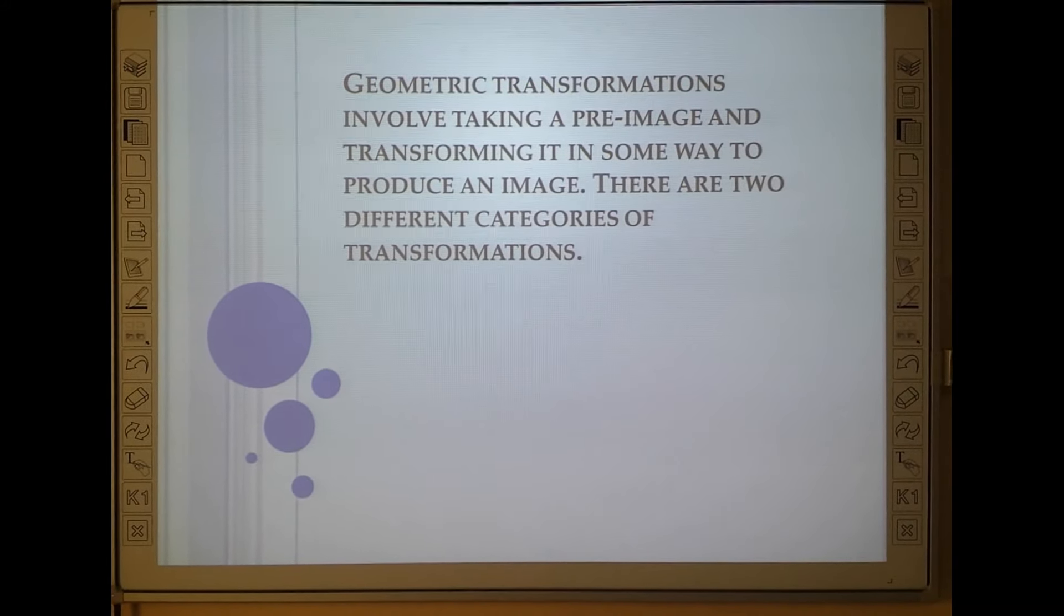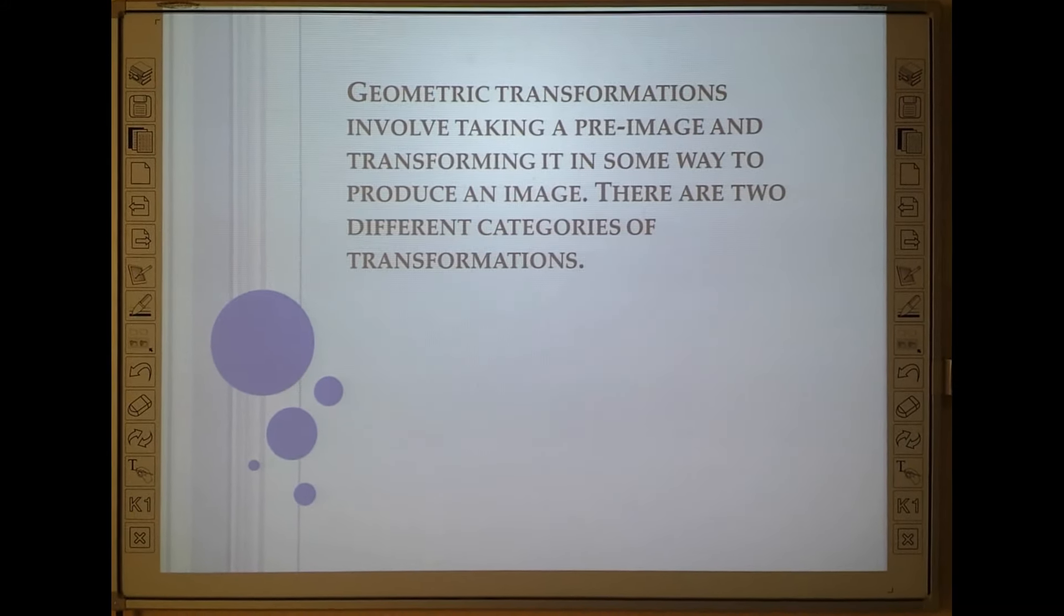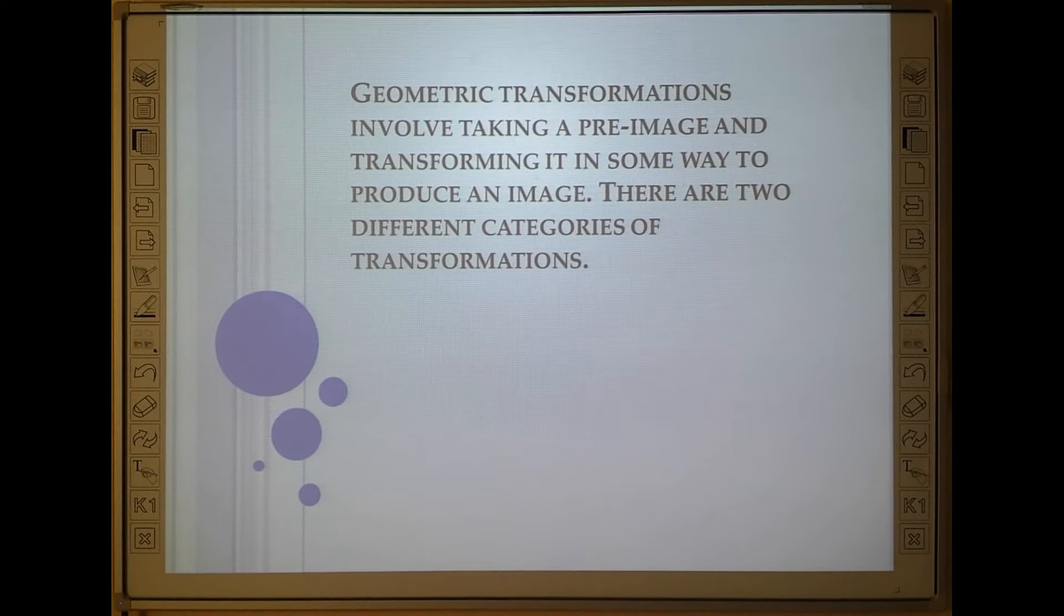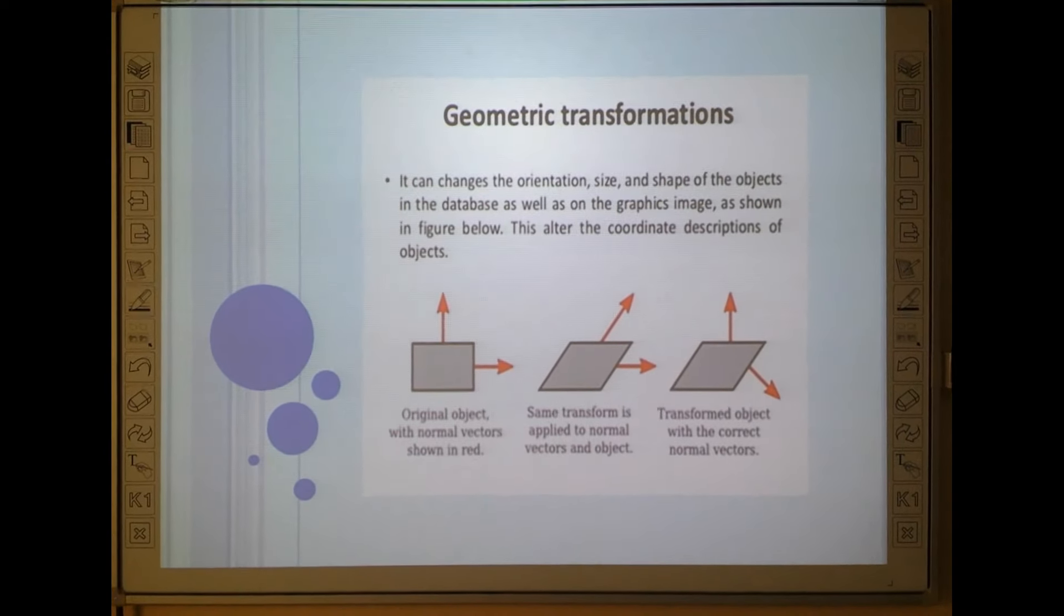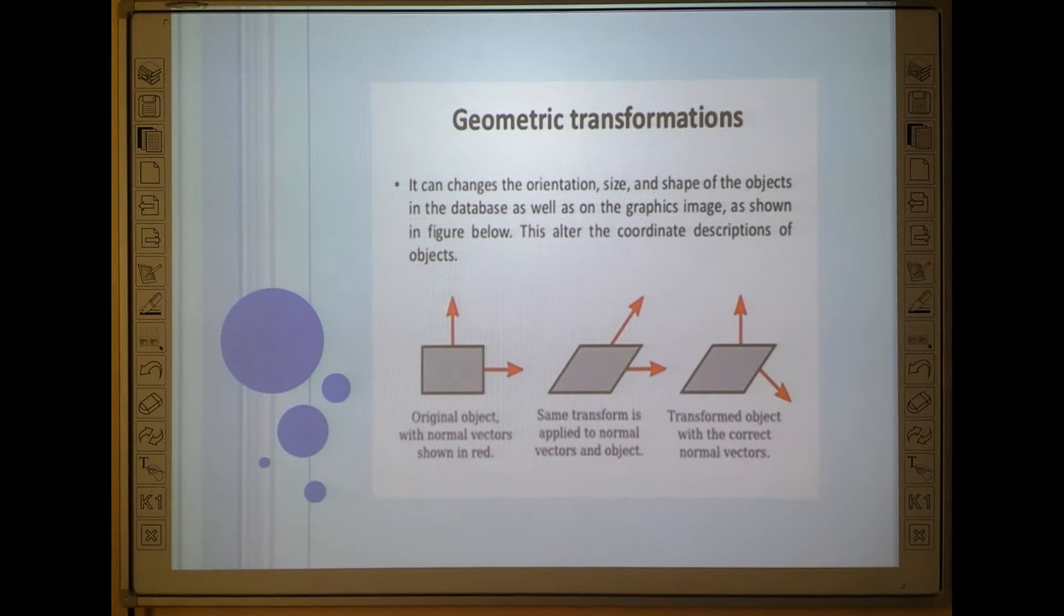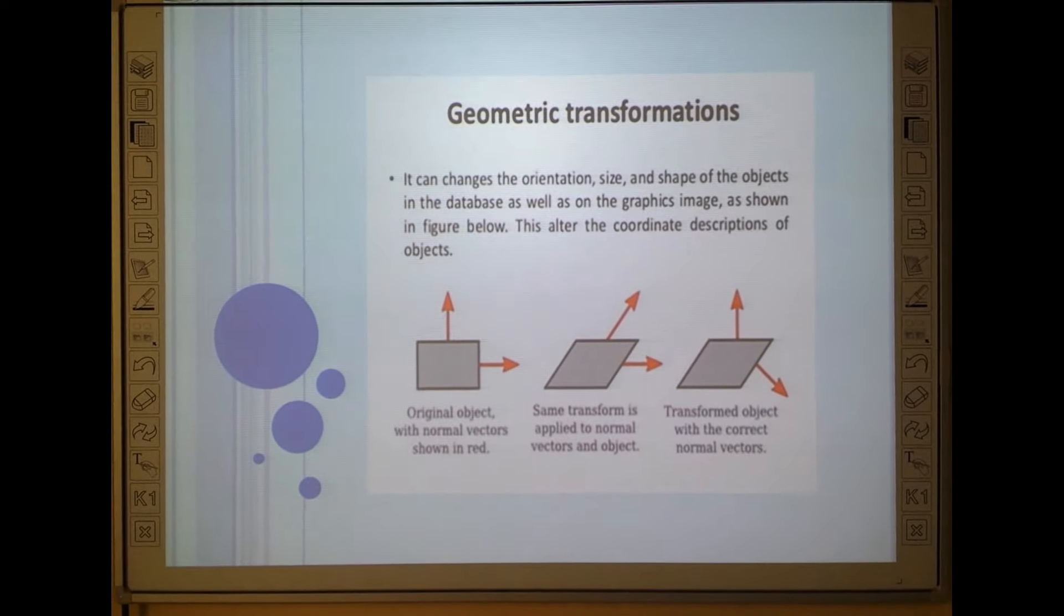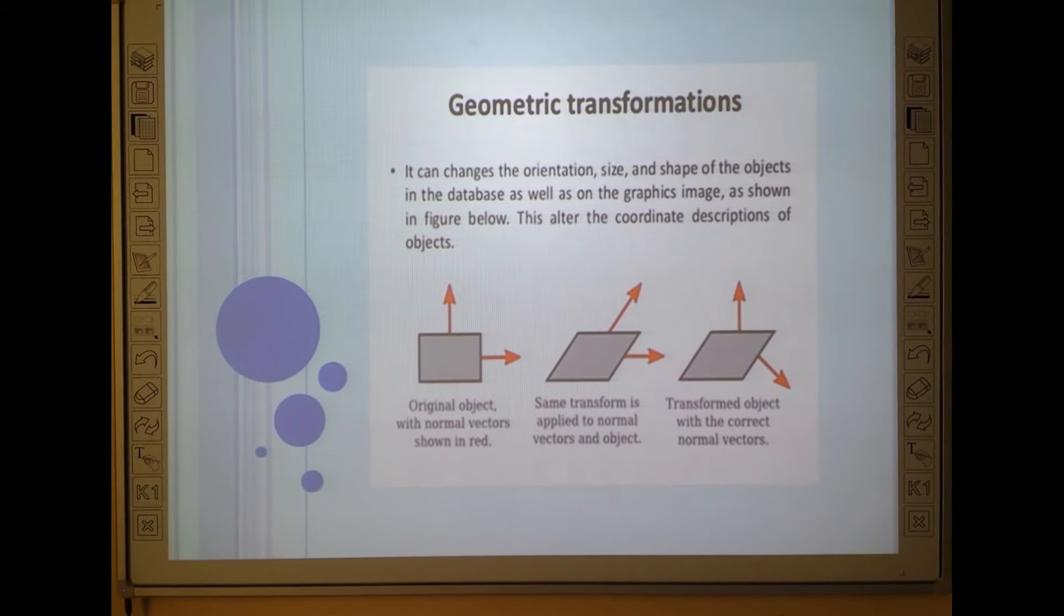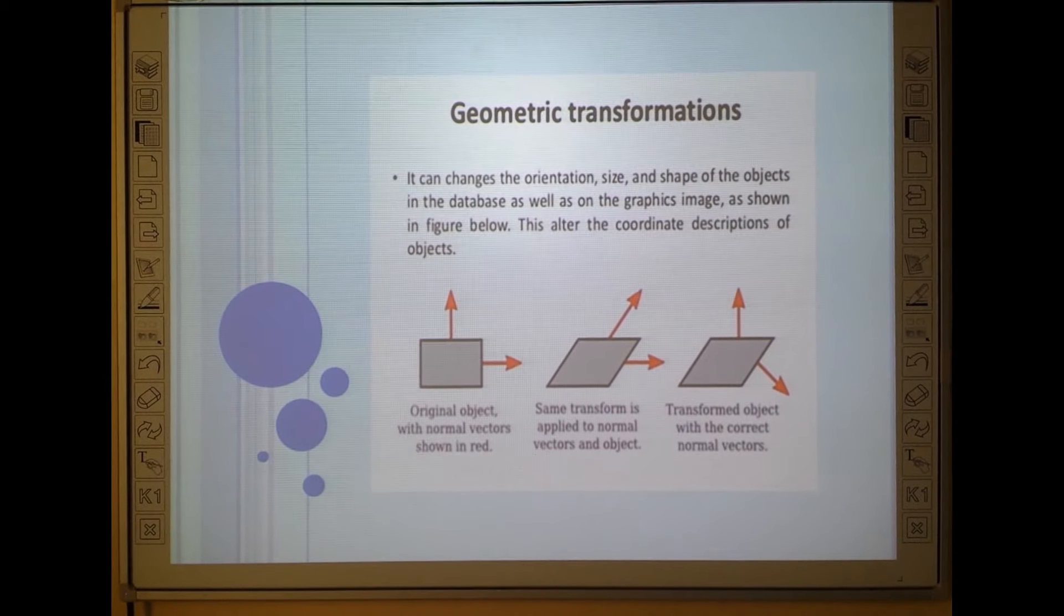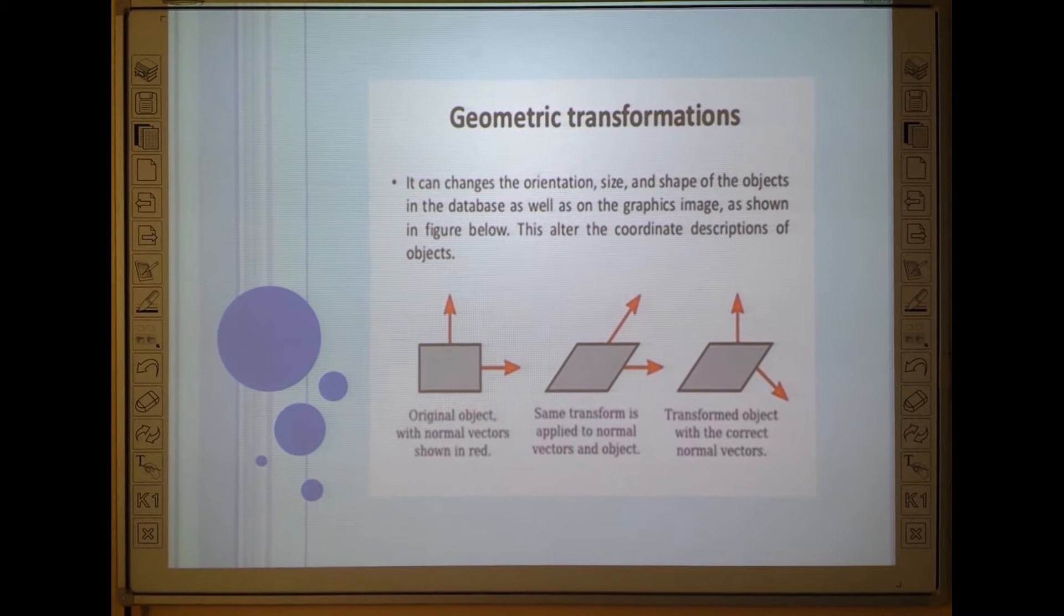There are two different categories of transformation. Basically, the two types of transformations tell you how the orientation, size, and shape of the object changes.